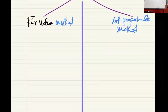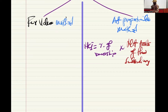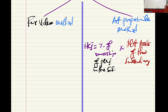Under the proportionate method, NCI equals the percentage of ownership of the NCI multiplied by the net assets of the subsidiary. Be careful — it's a generic 'net assets.' NCI at acquisition uses net assets at acquisition; NCI at the reporting date uses net assets at the reporting date. Either way, it is the NCI percentage multiplied by the net assets of the subsidiary.